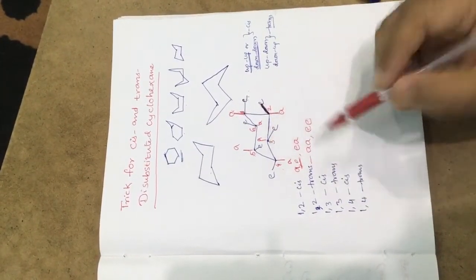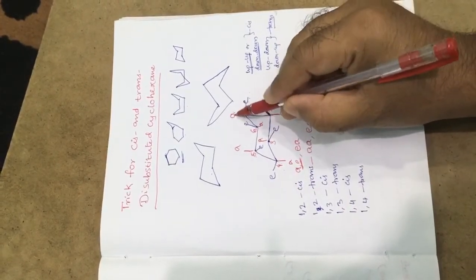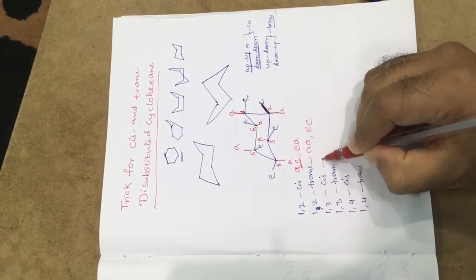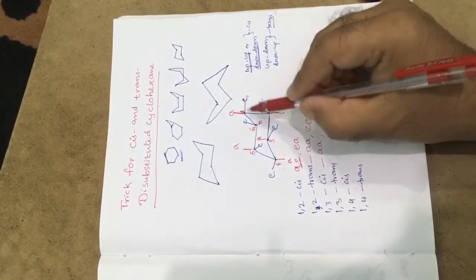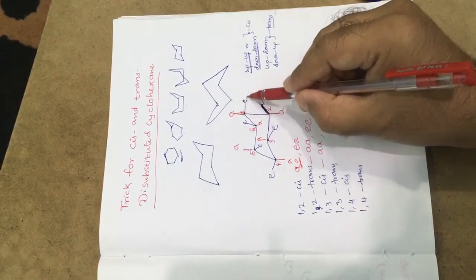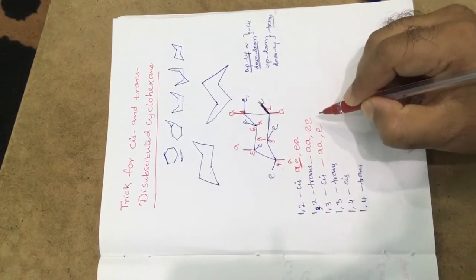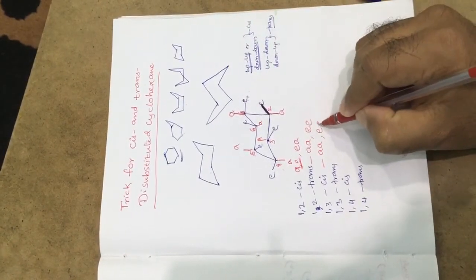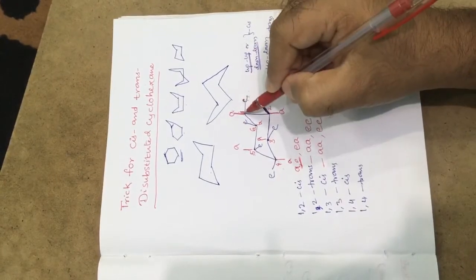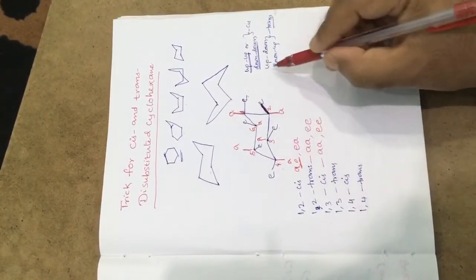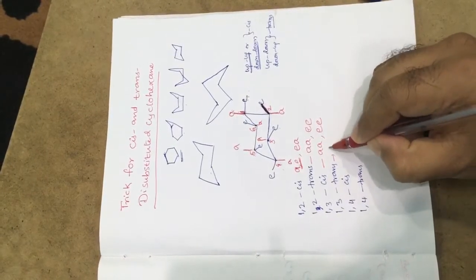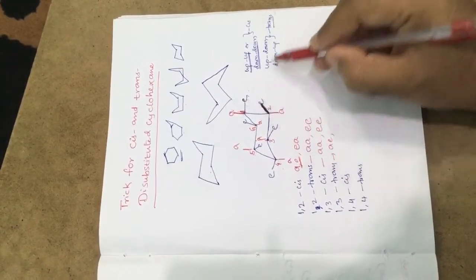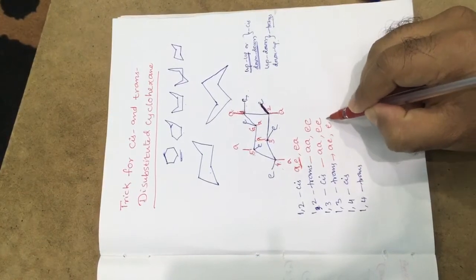For the 1,3 position: axial up and axial up — same direction, up-up — that is cis. So axial-axial in the 1,3 position is cis. Equatorial down and equatorial down — that is also cis, so equatorial-equatorial is also cis. For the trans form: axial up and equatorial down — up and down — that is trans. So axial-equatorial and equatorial-axial are trans in the 1,3 position.